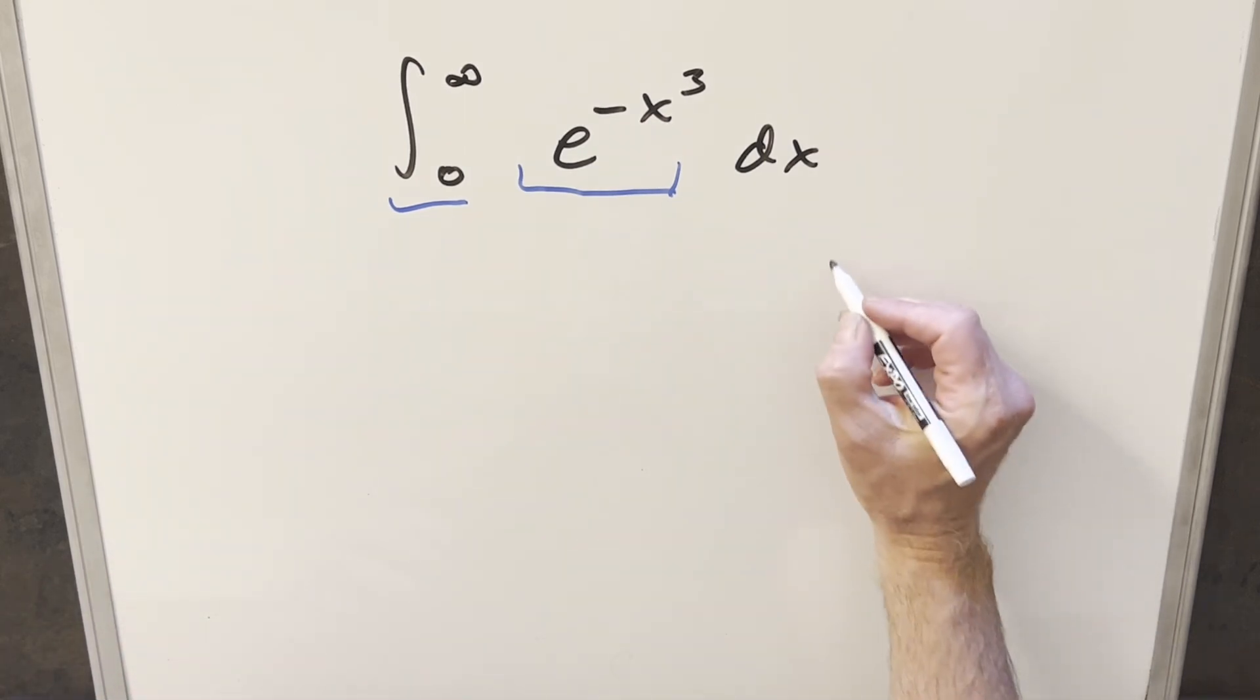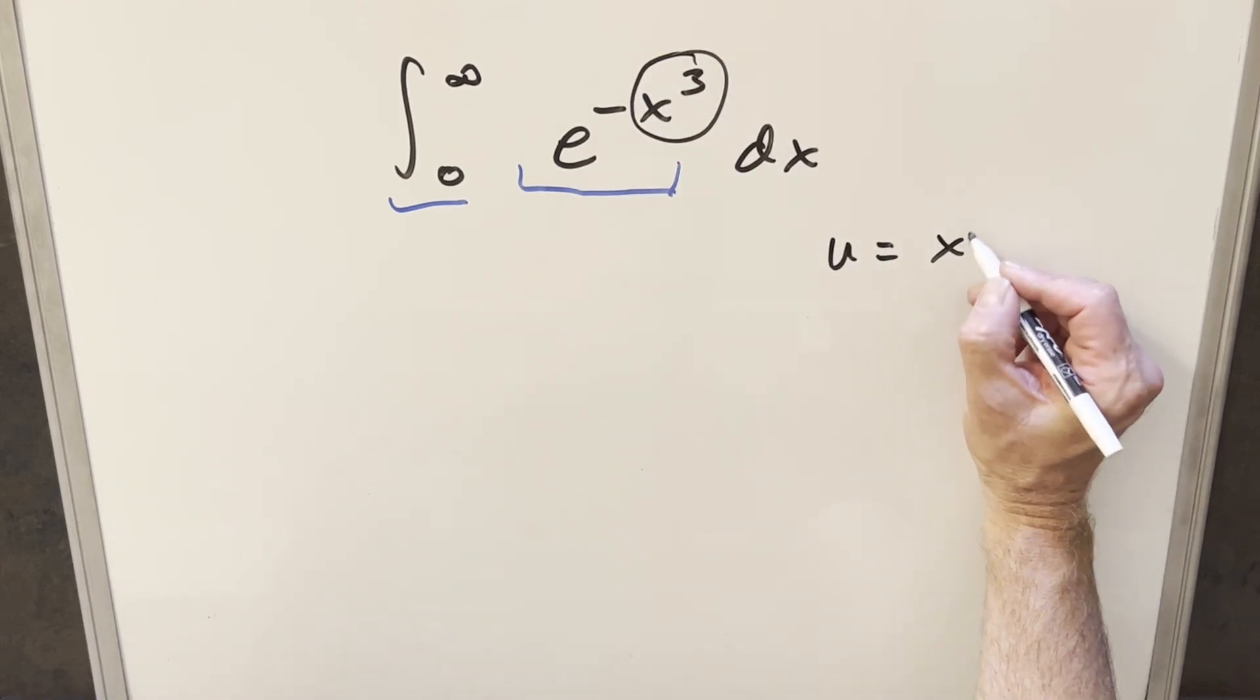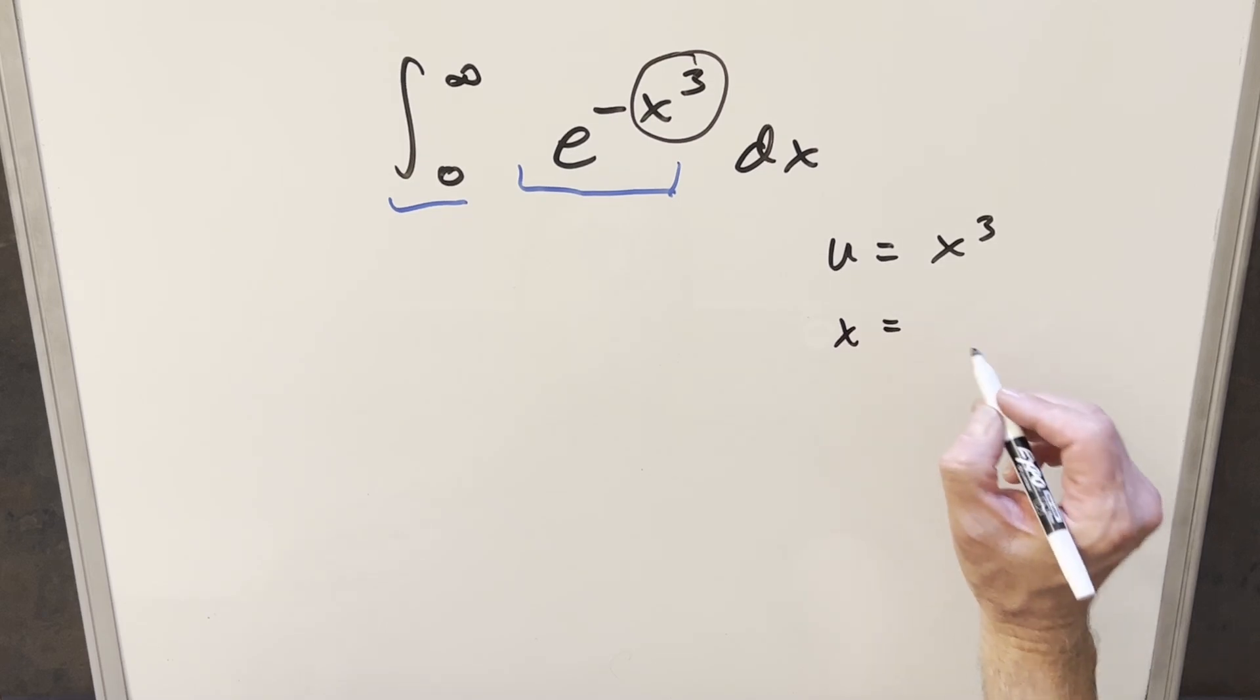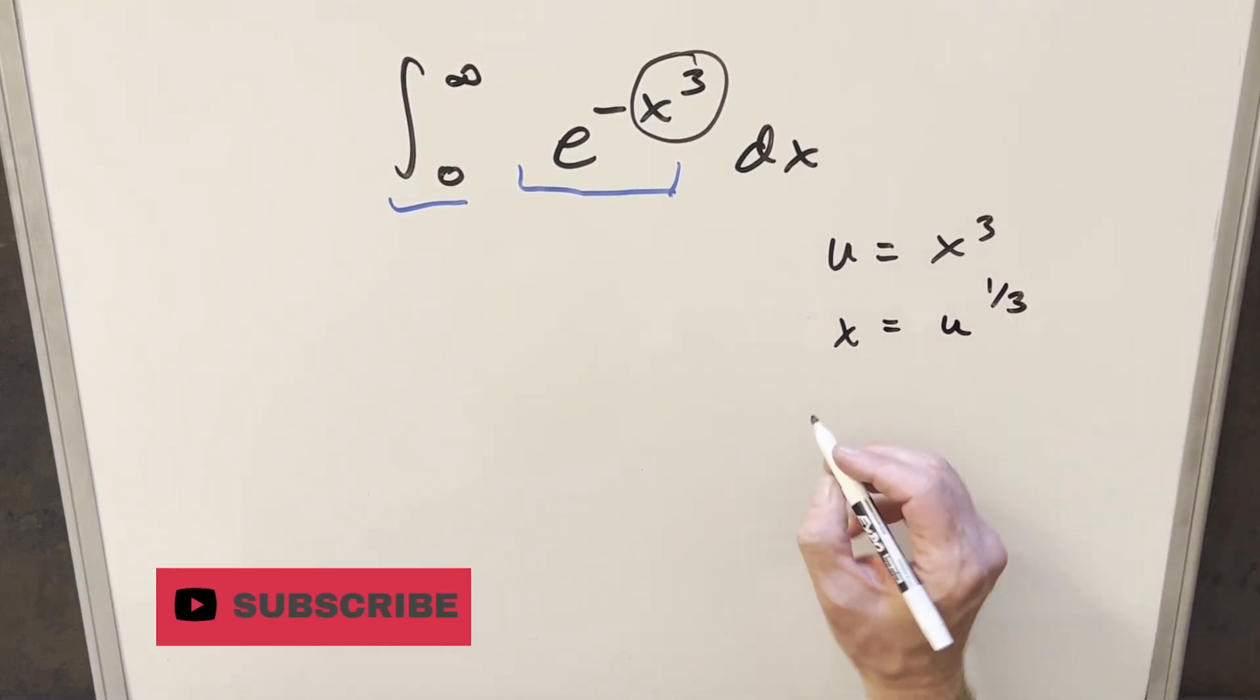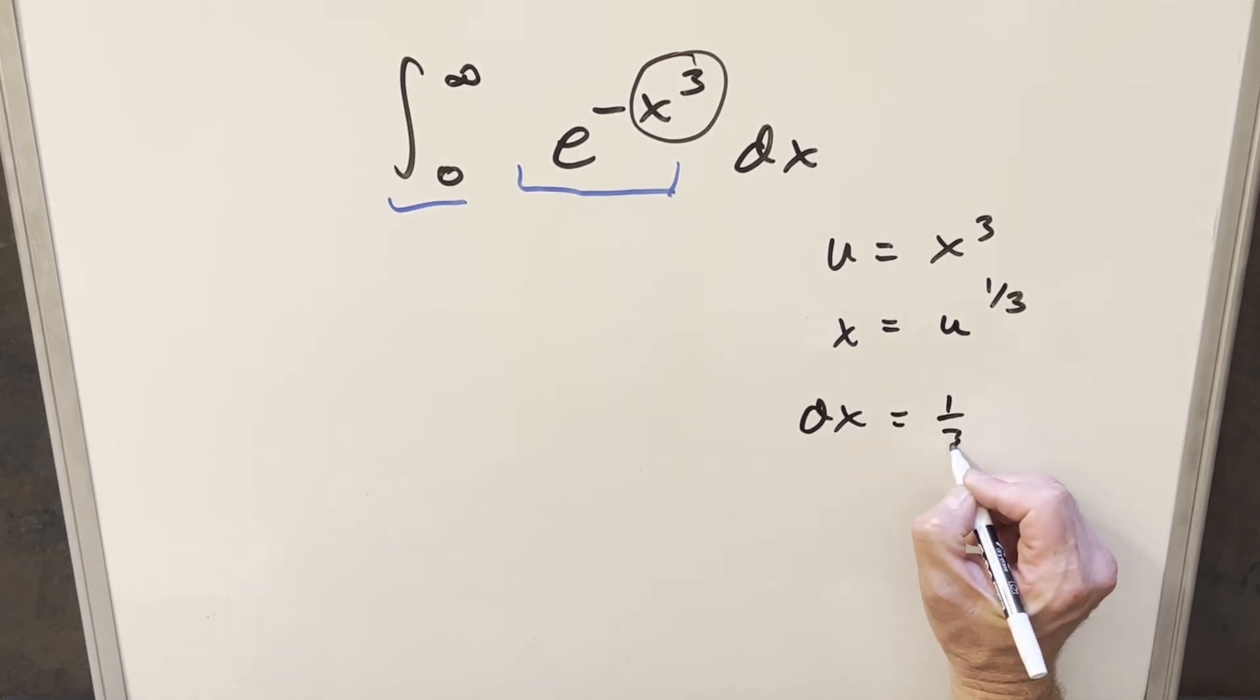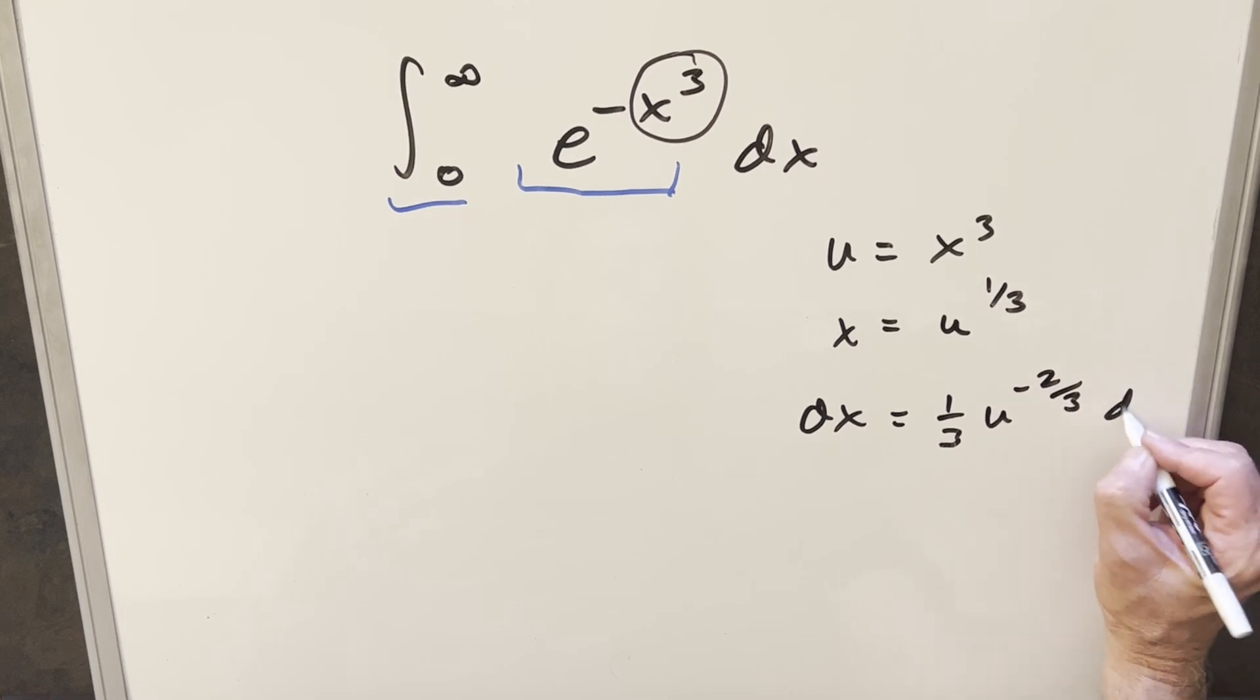Instead, I'll make my substitution for the whole exponent. We'll set u = x³, then solve for x by taking the one-third power on both sides. So x = u^(1/3). Taking the derivative to get dx, using the power rule, we get dx = (1/3)u^(-2/3) du.